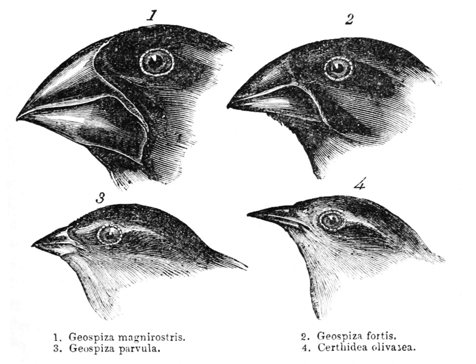Of Cactornis, the two species may be often seen climbing about the flowers of the great cactus trees, but all the other species of this group of finches, mingled together in flocks, feed on the dry and sterile ground of the lower districts. The males of all, or certainly of the greater number, are jet black, and the females, with perhaps one or two exceptions, are brown. The most curious fact is the perfect gradation in the size of the beaks in the different species of Geospiza, from one as large as that of a hawfinch to that of a chaffinch, and if Mr. Gould is right in including his subgroup Certhidia in the main group, even to that of a warbler.